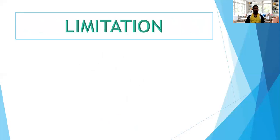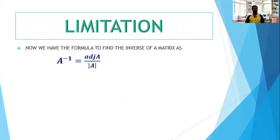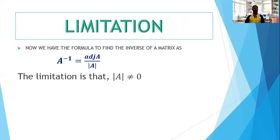What is the limitation in that formula? We have A inverse equals adjoint A divided by determinant A. The right side is a fraction, so look at what the denominator is — it is determinant of A. Determinant of A is a value, and that value should not be 0. Therefore, the inverse can be defined for a square matrix only if determinant A is not equal to 0.